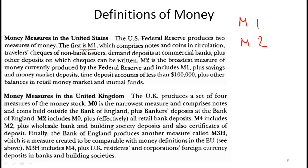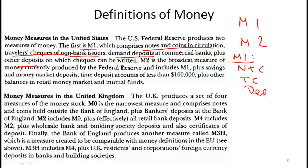The US Federal Reserve produces two measures of money. M1 comprises: notes and coins in circulation, travelers checks from non-bank issuers, demand deposits (regular checking accounts), and other deposits on which checks can be written. This is often referred to as a relatively narrow measure of money.